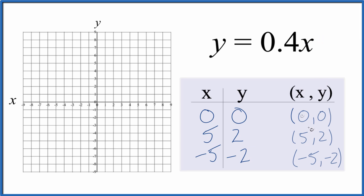So we have 0, 0. So x is 0, y is 0. We have x is 5 and y is 2. Then we have negative 5 for x, negative 2 for y. So negative 5, negative 2. You can see we have a line there.